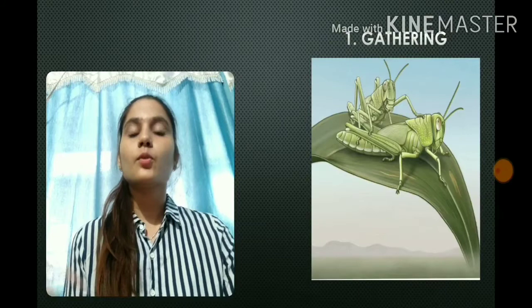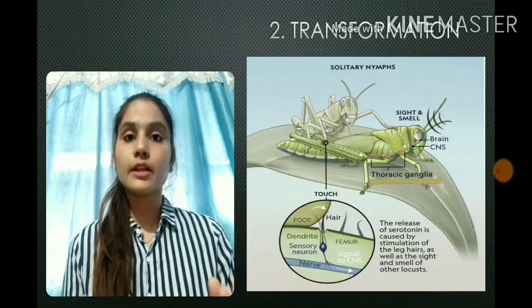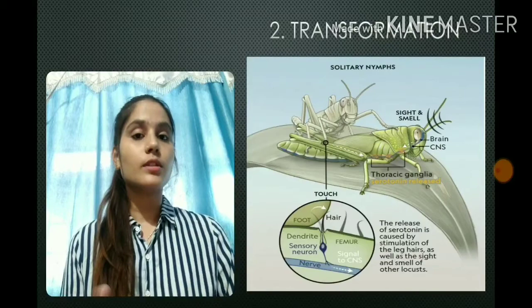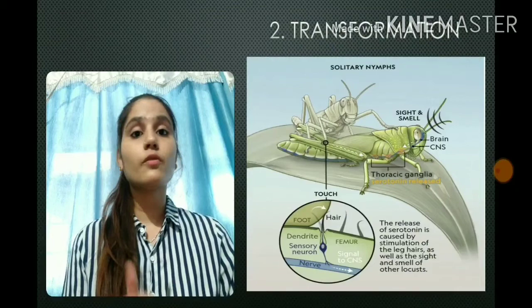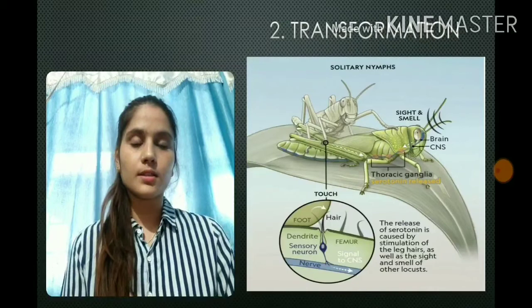Within hours of crowding, a boost of serotonin is released into the central nervous system, which causes the transformation into the gregarious phase. This locust then exhibits rapid movement, increased sociability, as well as increased self-grooming. The release of serotonin is generally caused by the stimulation of leg hairs by other locusts, or the sight and smell of other locusts.